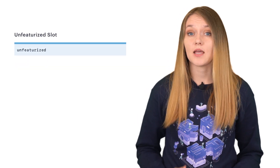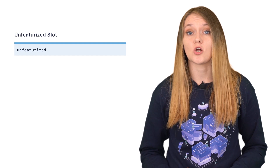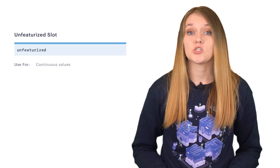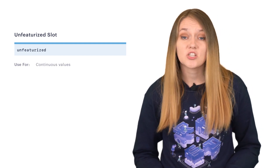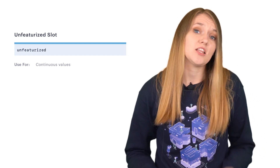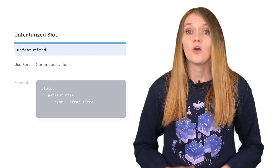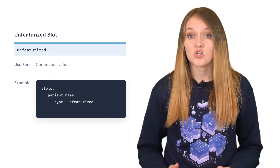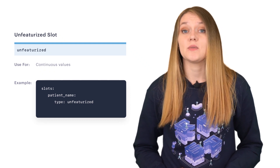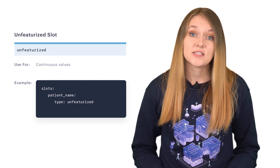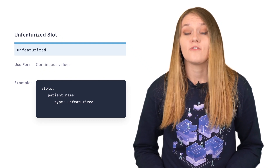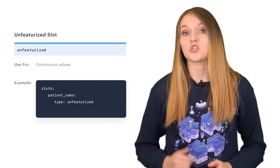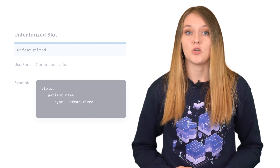Sometimes you want to use slots to only store some information for your assistant to use in specific custom actions or at later stages of the conversation. For such details you should use the slot type unfeaturized, which means that the presence and value of the slot will have no influence on how the dialogue management model makes predictions.